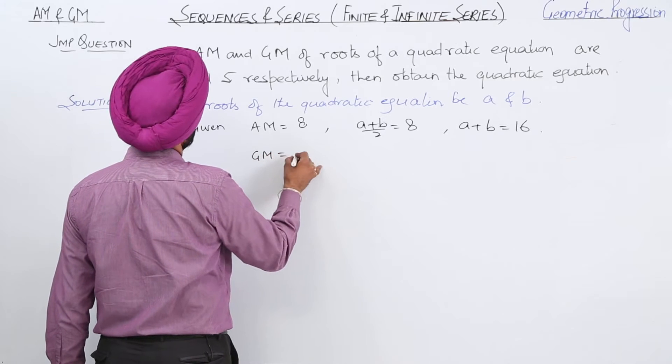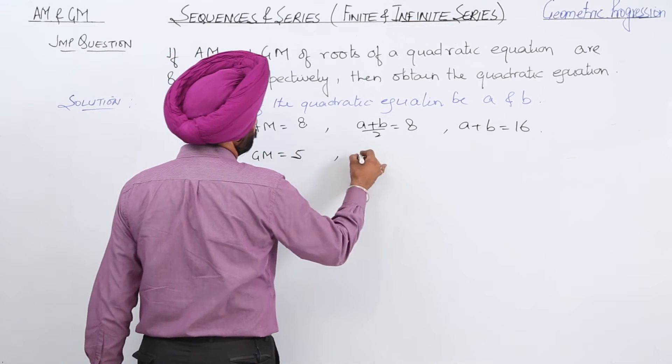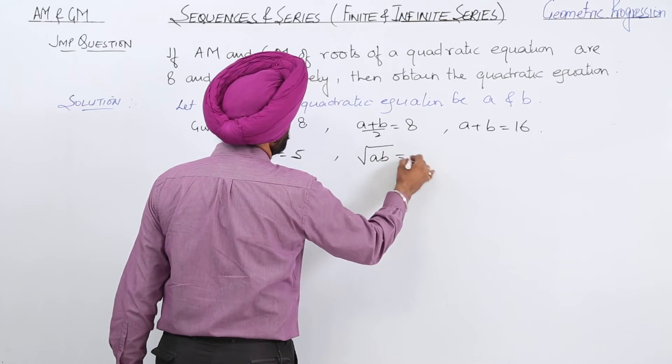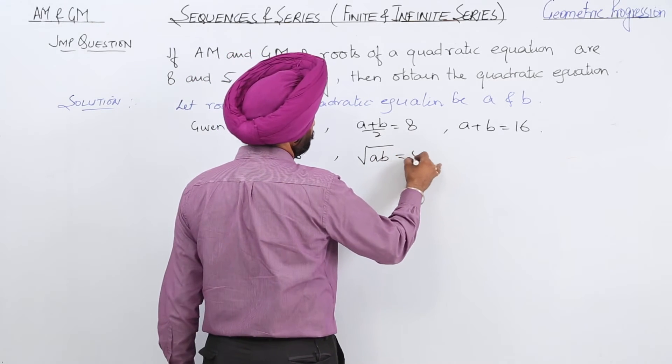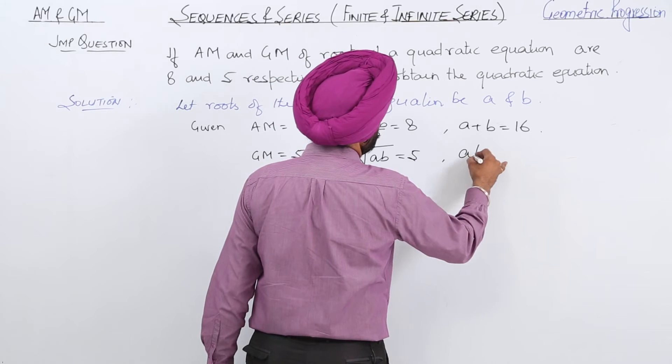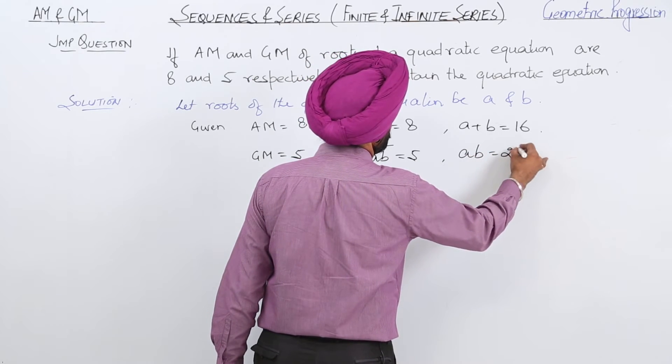GM is 5, or we can write it as √(ab) = 5, which means ab = 25.